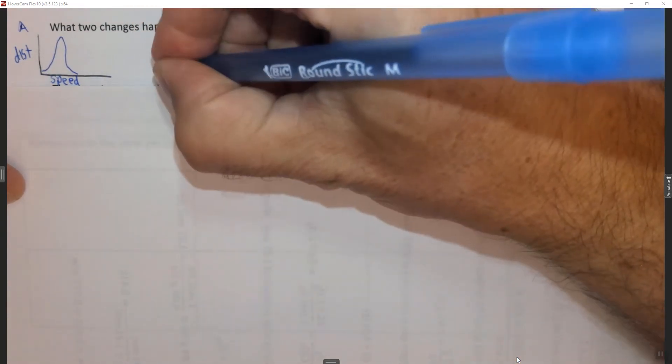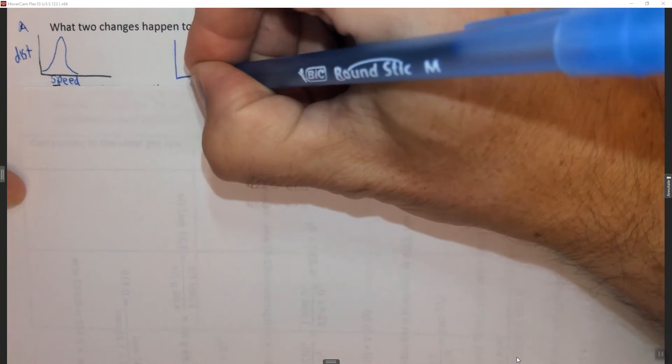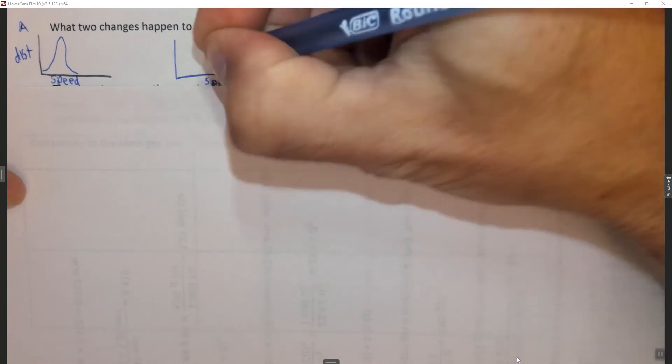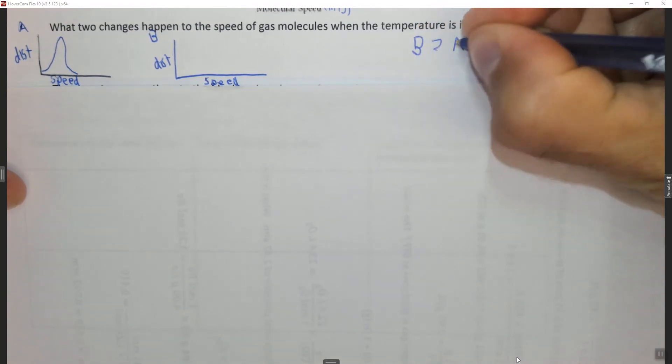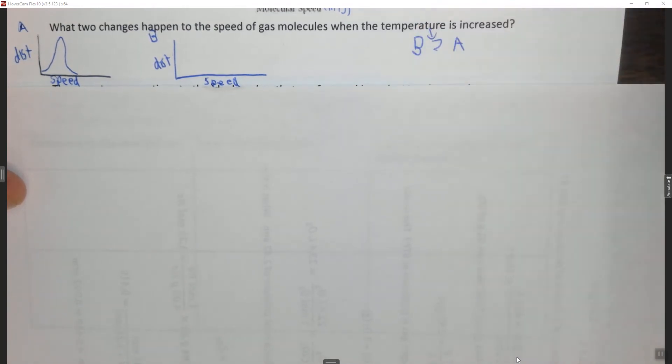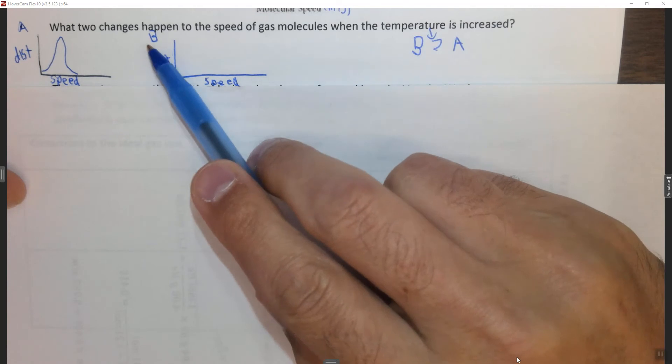Now if we have another graph where we have the speed versus the distribution, and this is for B. And in this case B is greater than A in terms of their temperature. So B is at a higher temperature.